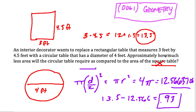It's asking us how much less area the circular table requires compared to the rectangular table. The circular table takes up less space — it takes up 0.93 less square feet.